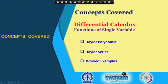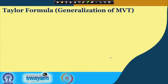These are the topics we will cover: we will start with Taylor's polynomial, then come to Taylor series from Taylor's polynomial, and work through some worked-out examples. Taylor's formula is a generalization of the mean value theorem or the Cauchy mean value theorem, which we learned in the last lecture.